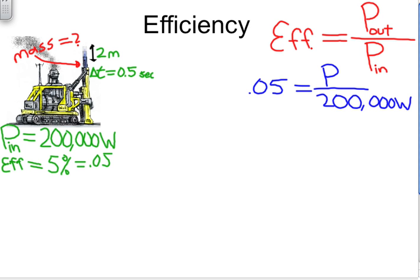And in order to solve this problem we multiply both sides by 200,000. Remember what you do to one side you always have to do to the other side. These guys cancel.